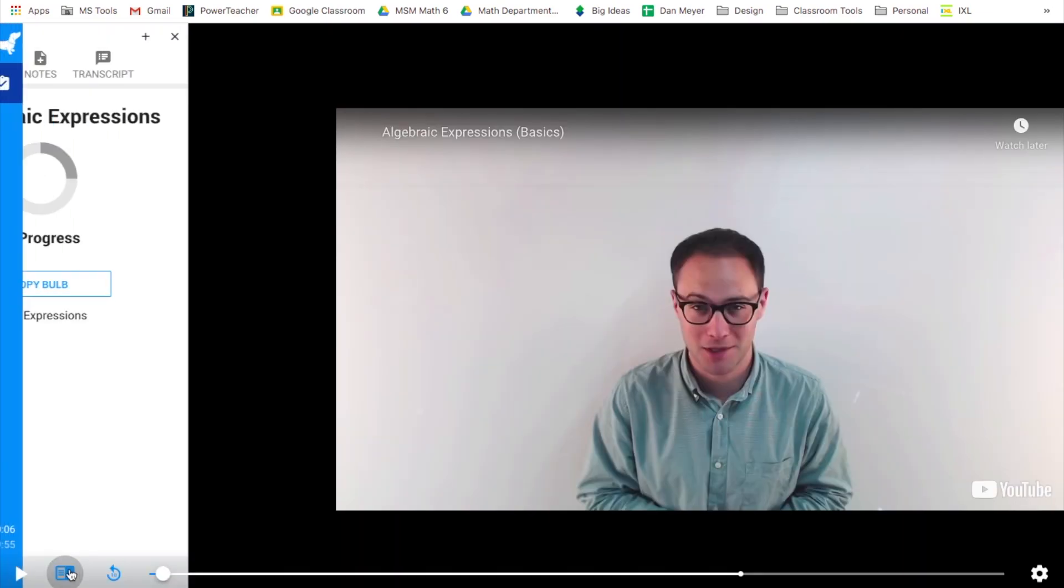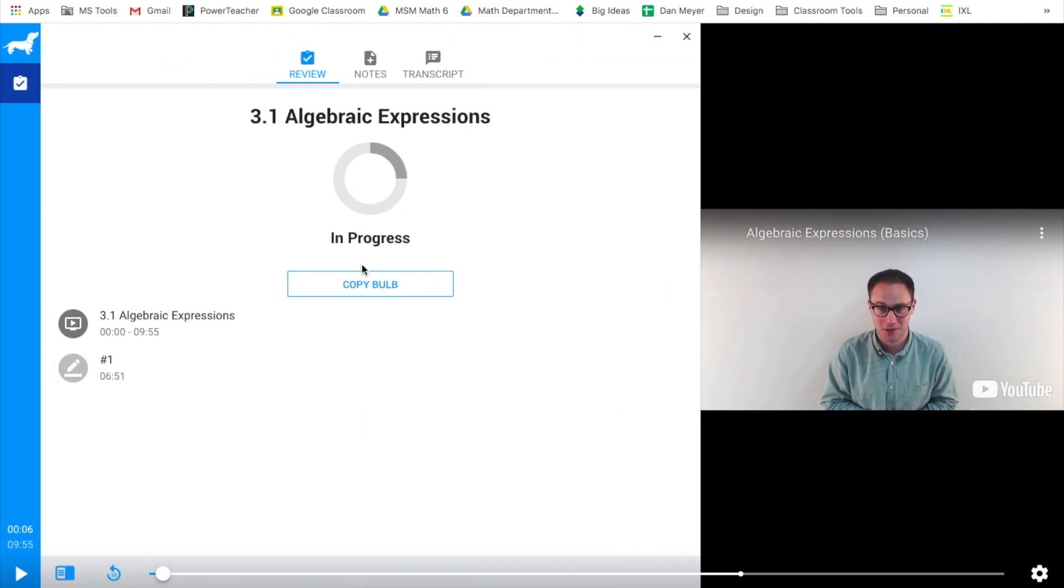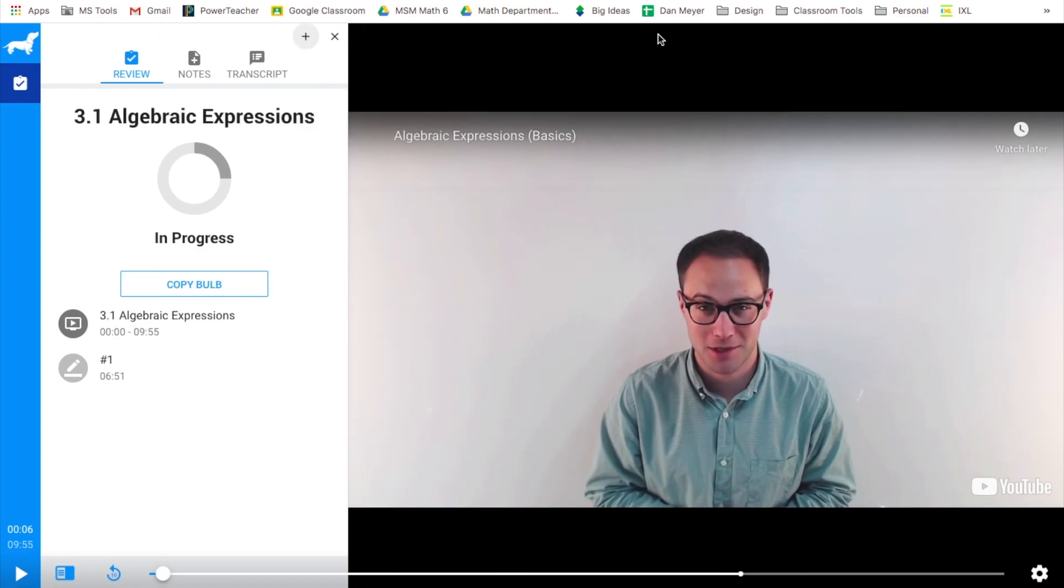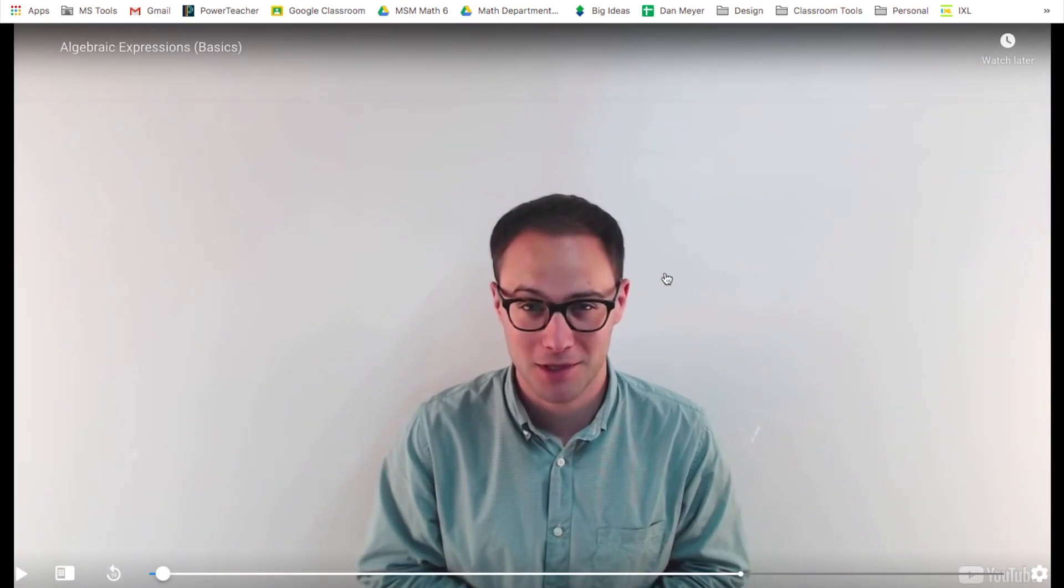This first button is really important. If you click this button, you're going to get some different things that come up. First, it tells you the name of the bulb. Next, it tells you the progress, how much of the video you've actually watched. You can also see down here questions that you may have answered, and you get an overview of how long the bulb actually is. If this view is not big enough for you, you can click this and make it a lot bigger. When you want to get rid of this, just click this again and you've got your full screen for the video.